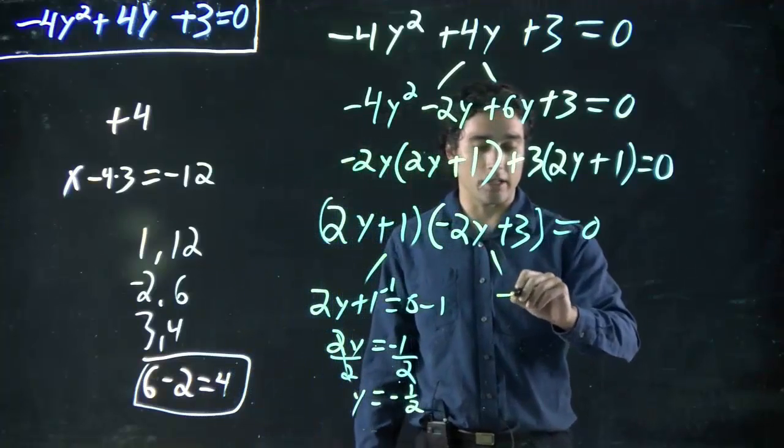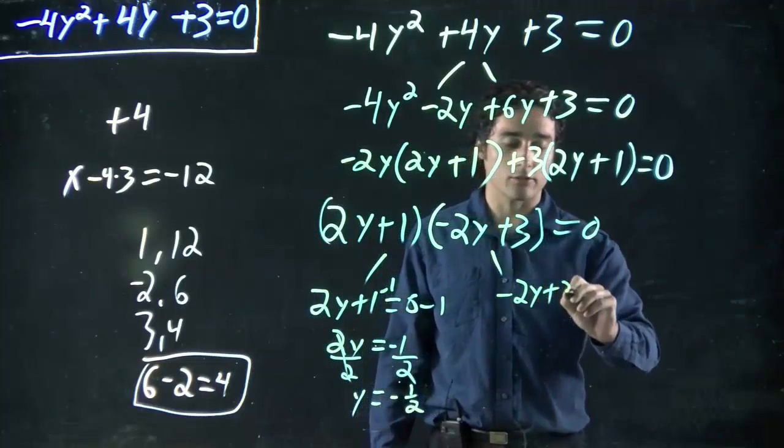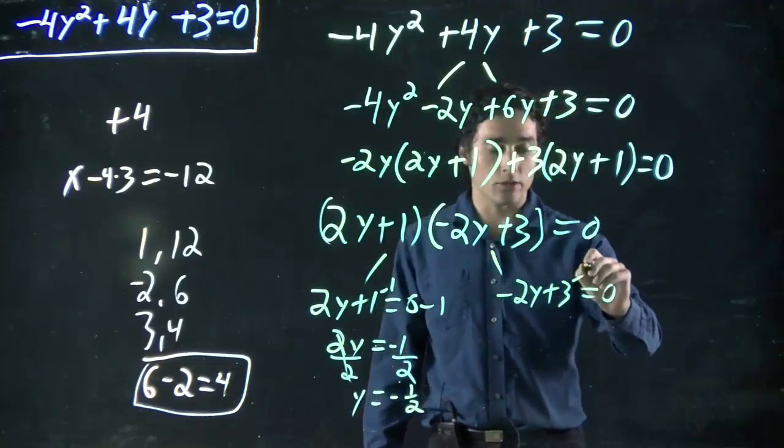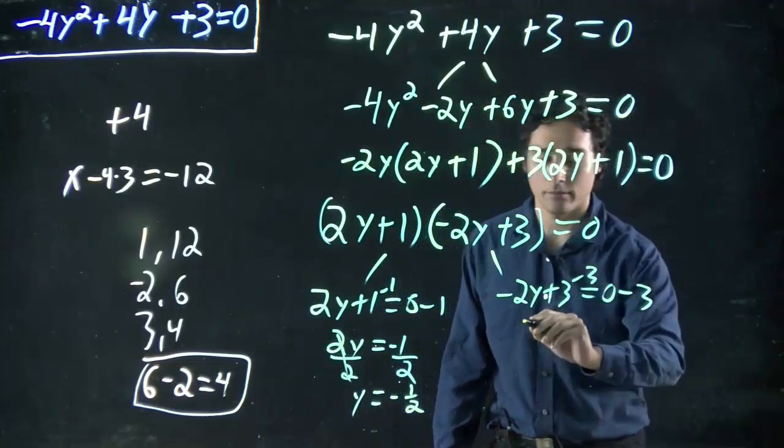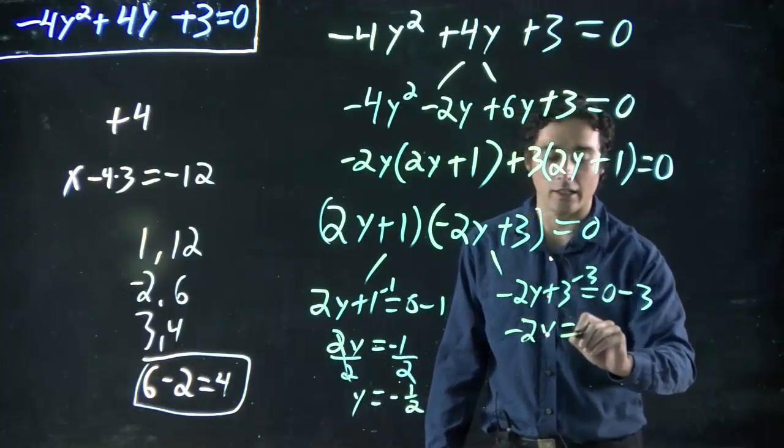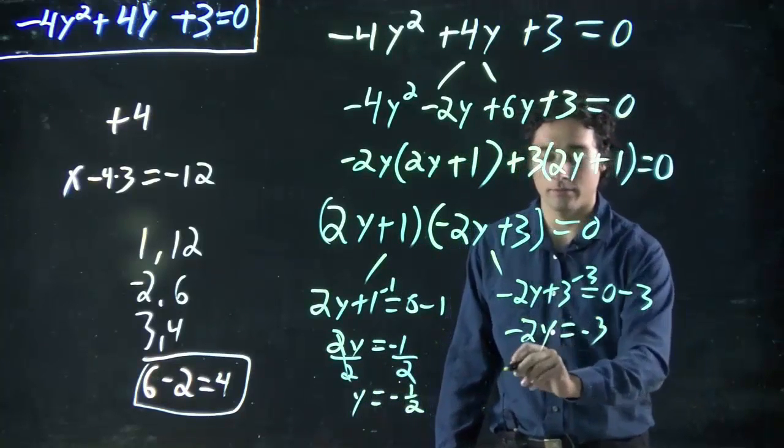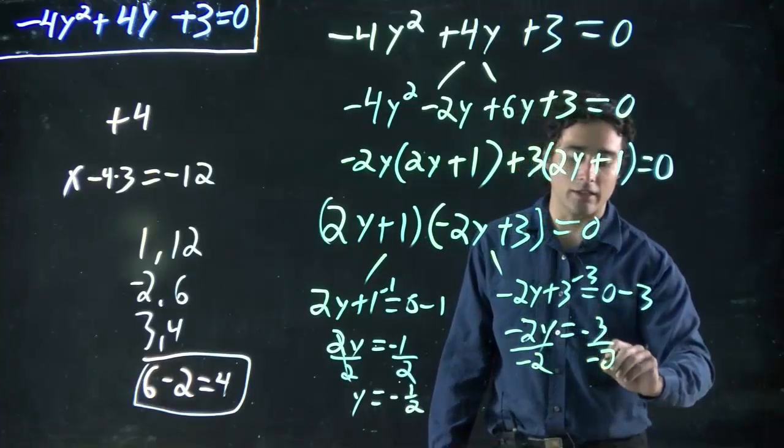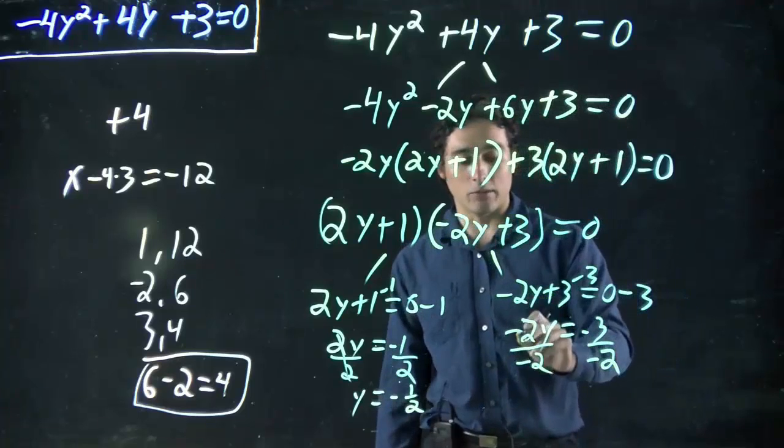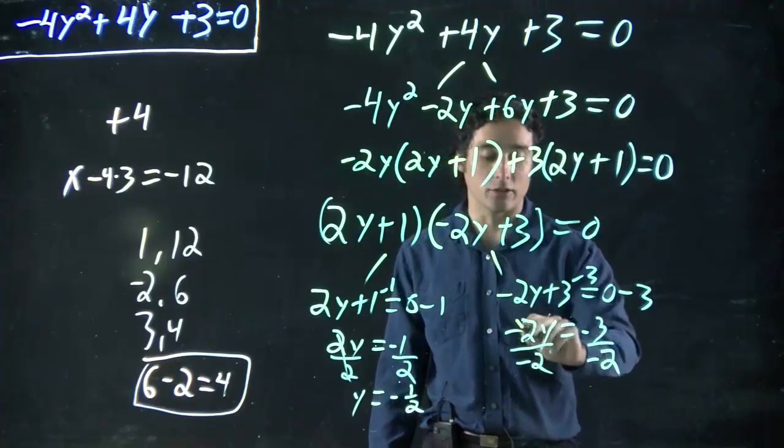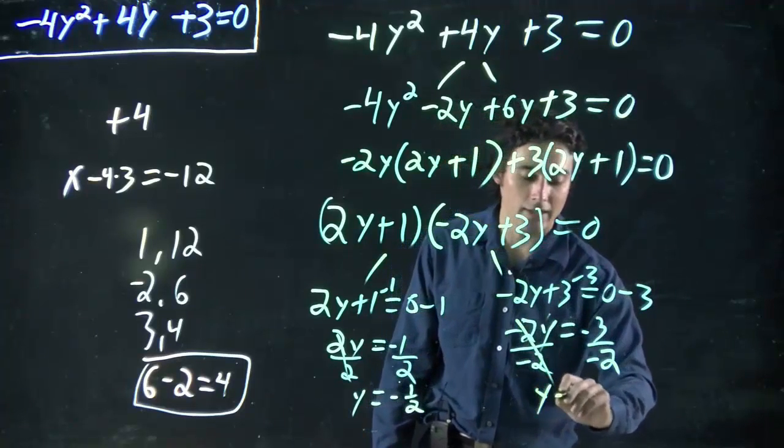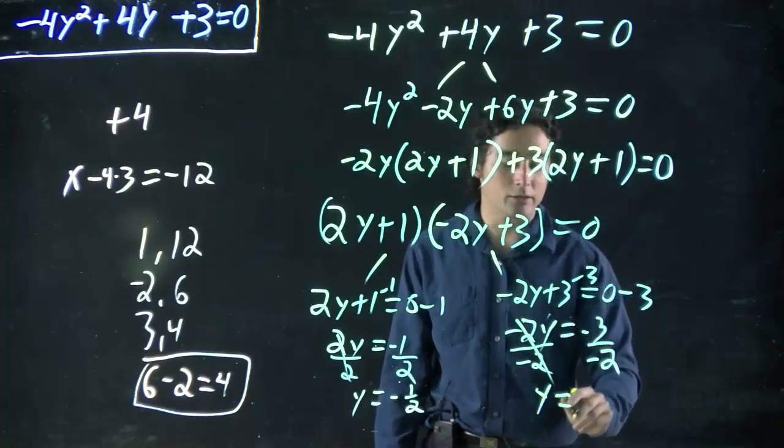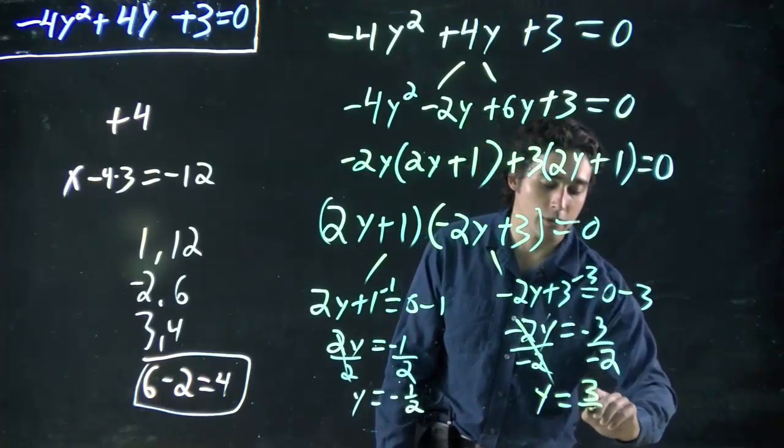And then same thing here. -2y + 3 = 0. Subtract 3 from both sides. -2y = -3. Divide both sides by -2. Again, doing the opposite of what's being done to the y. It's being multiplied by -2, divide by -2. So we're left with y. In this case, we have a minus and a minus which will cancel to equal 3/2.